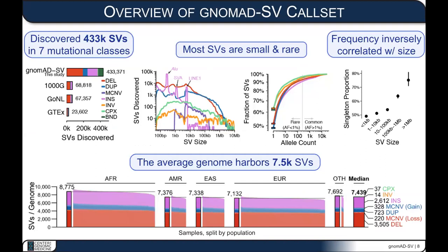In total, the current gnomAD SV dataset includes 433,000 different structural variants across seven different classes. Red and blue are copy number variants — the two most relevant for this webinar — though there are many other classes represented. Across the board, most structural variants captured in gnomAD are small and rare, and rarer variants tended to be larger, consistent with those variants being more deleterious. On average, we capture around 7,500 structural variants per genome using GATK-SV.